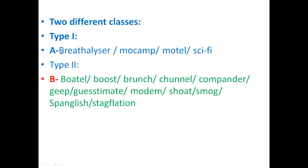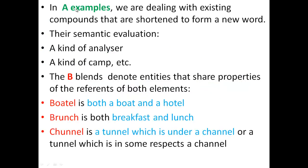Now let's look at the characteristics of the A examples. In A examples, we are dealing with existing compounds that are shortened to form a new word. As for their meaning — this is what we call semantic evaluation — in all of them we ask the question: 'What kind of?' For instance, breathalyzer: what kind of analyzer? It analyzes breath. Mocamp: what kind of camp? A camp where you can park your car. Motel: what kind of hotel? A hotel where you can still park your car near your room.